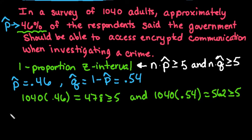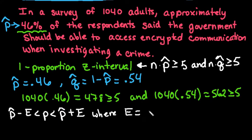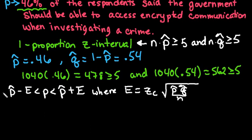The two that I'm the most familiar with is p̂ minus the error, and the population proportion is in between that, p̂ plus the error, where E is equal to zc times the square root of p̂q̂ over n.